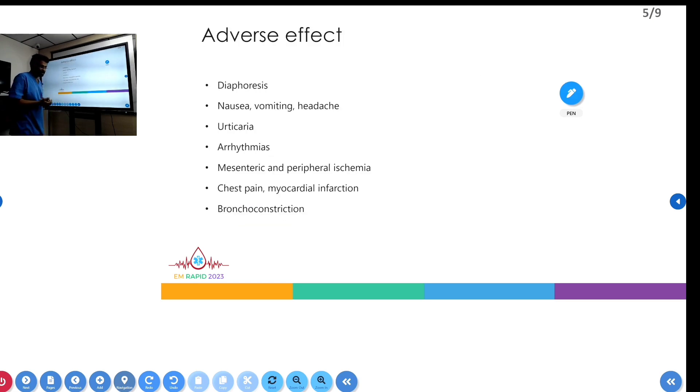The main adverse effects of vasopressin include diaphoresis, nausea, vomiting, headache, urticaria, arrhythmias, myocardial infarction, and bronchoconstriction.